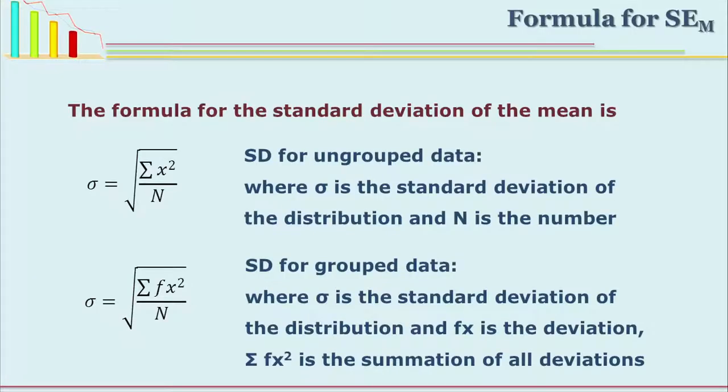Here you will see two different formulas — one for ungrouped data and one for grouped data. For ungrouped data, where you have 50 cases and have not grouped them, you find the deviation from the mean, square it, and sum all deviation squares. The standard deviation sigma equals the square root of the summation of x-squared upon n. For grouped data with class intervals, the formula is sigma equals the square root of summation of f times x-squared upon n, where f is the frequency.